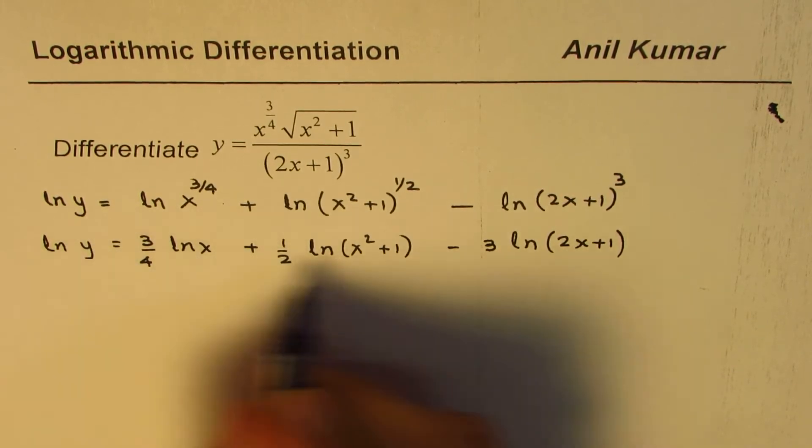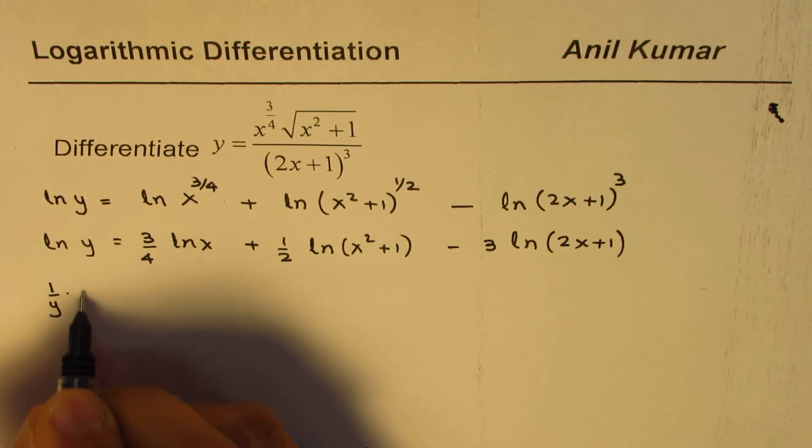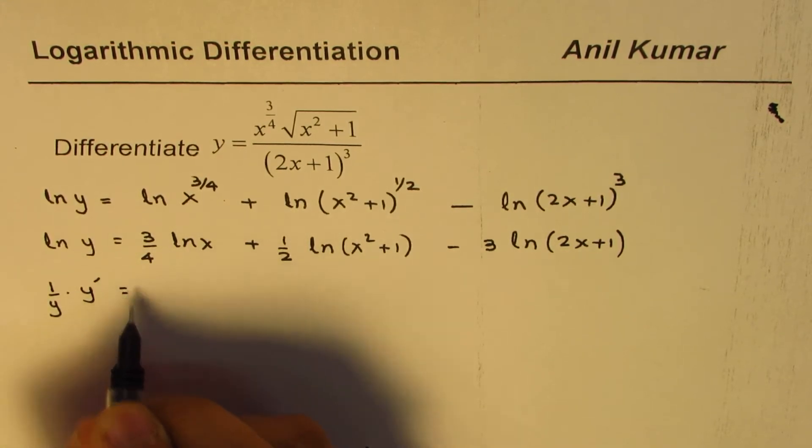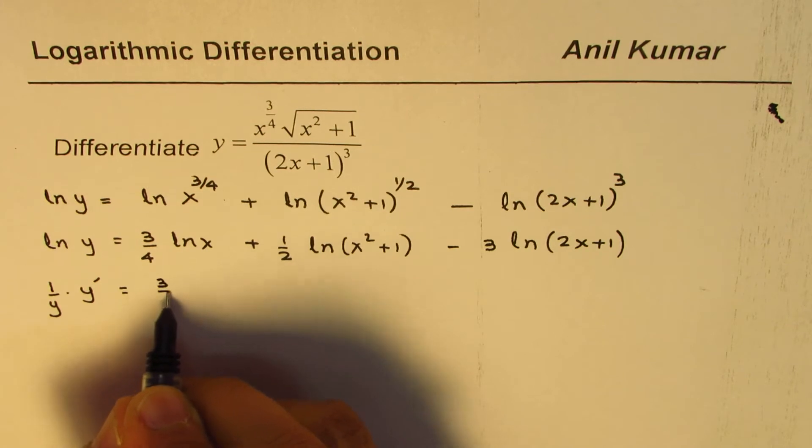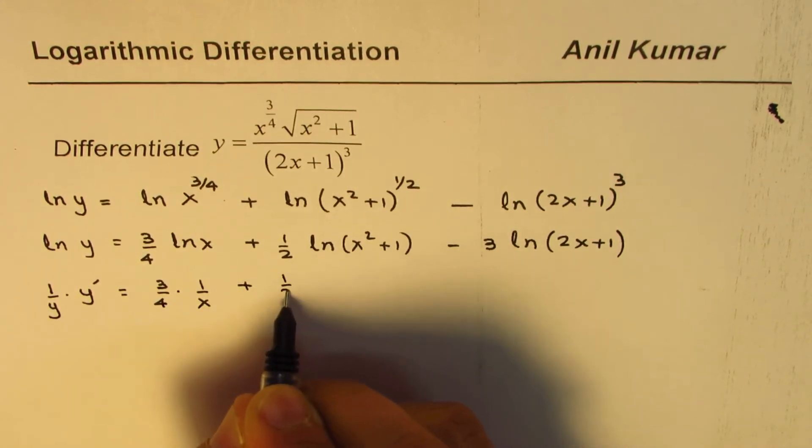We get 1/y times y'. The derivative of this will be 3/4 times 1/x plus 1/2 times 1/(x² + 1) times the derivative of this, which is 2x, minus...